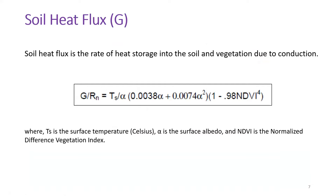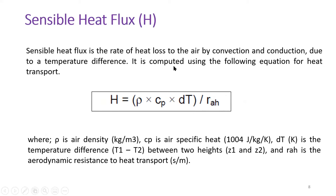The next component is soil heat flux, which is the rate of heat storage into the soil and vegetation due to conduction. Using a specific equation, we calculate soil heat flux from surface temperature, albedo (alpha), and NDVI — all derived from satellite data. Similarly, sensible heat flux is the rate of heat loss to the air by convection and conduction due to the temperature difference between two heights — two meters and ten meters.